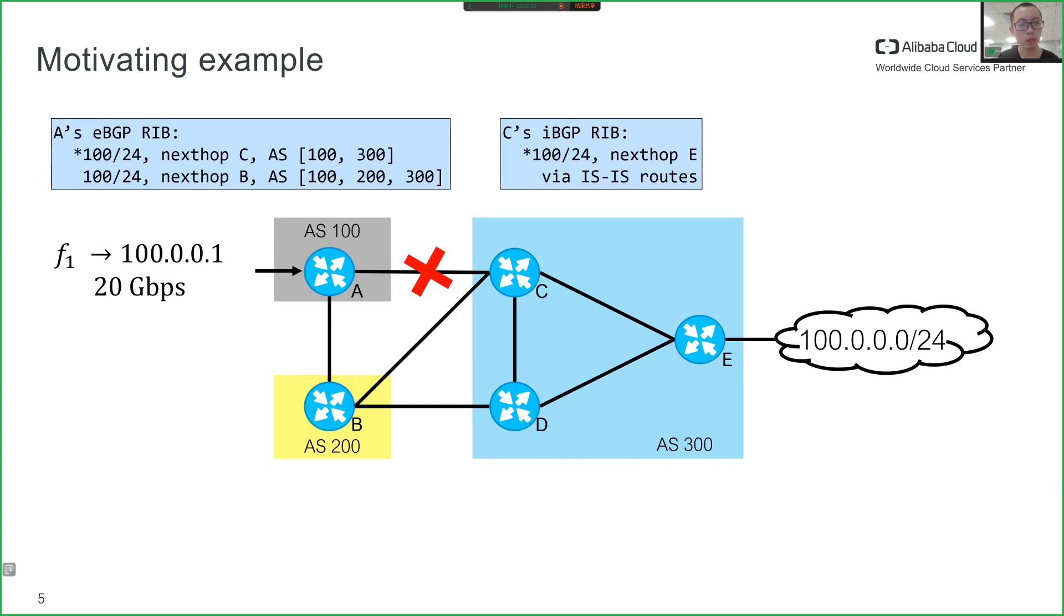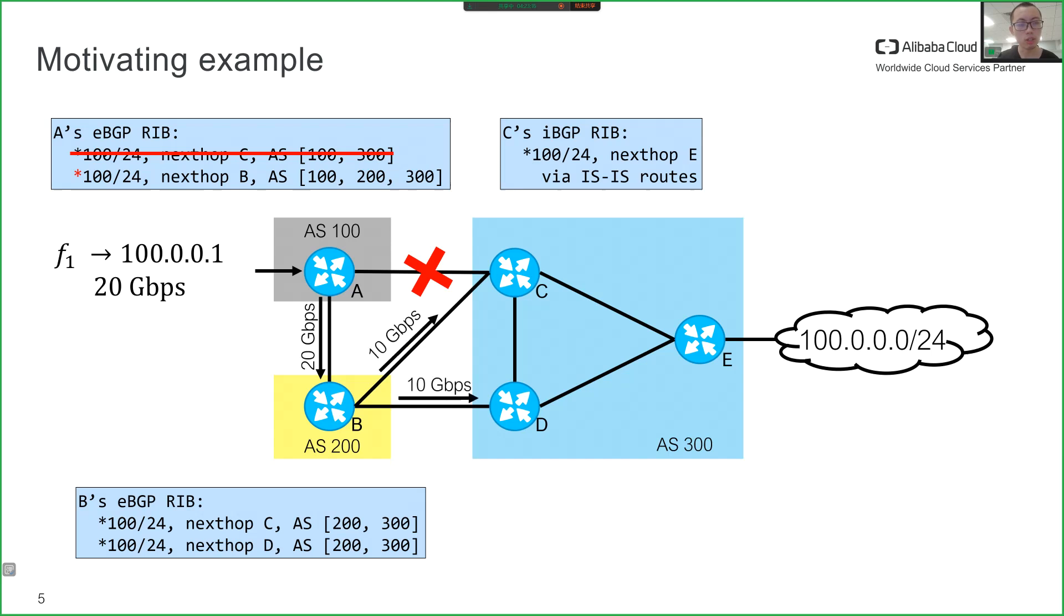Now suppose link C to E fails. The first route at router A becomes unavailable. The traffic is routed through the second route. There are two routes in router B's routing table, but neither is preferred over the other because their AS paths are the same. Thus, the traffic will be equally split to both router C and router D.